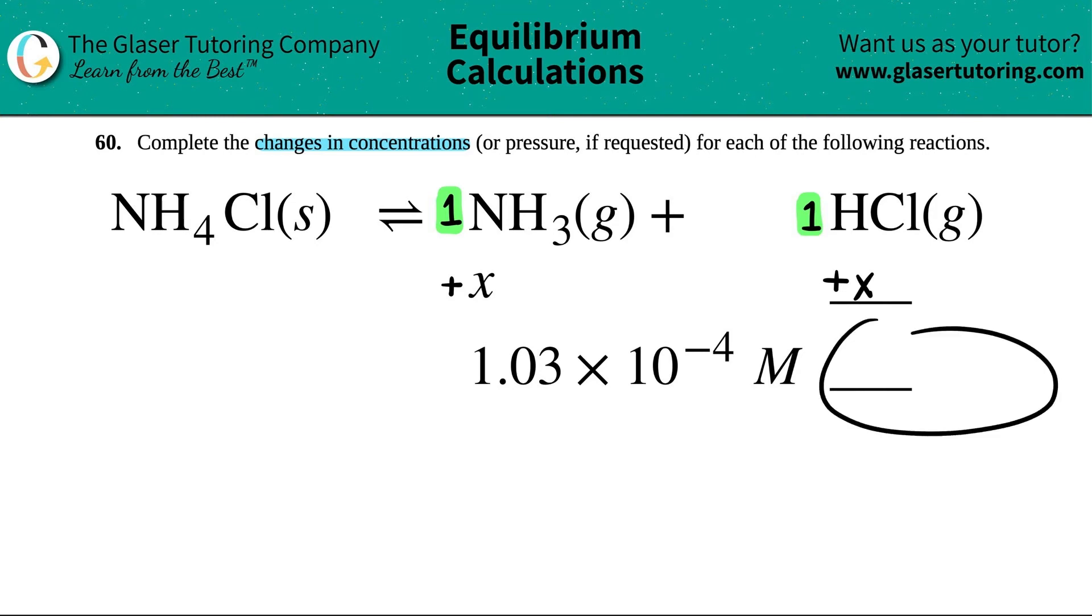And now we just need to find out the number. But it's exactly the same. If X was equal to 1.03 times 10 to the negative 4 molarity, and you're adding the same amount, this would be the same number. So in this case, both products are increasing by 1.03 times 10 to the negative 4 molarity.